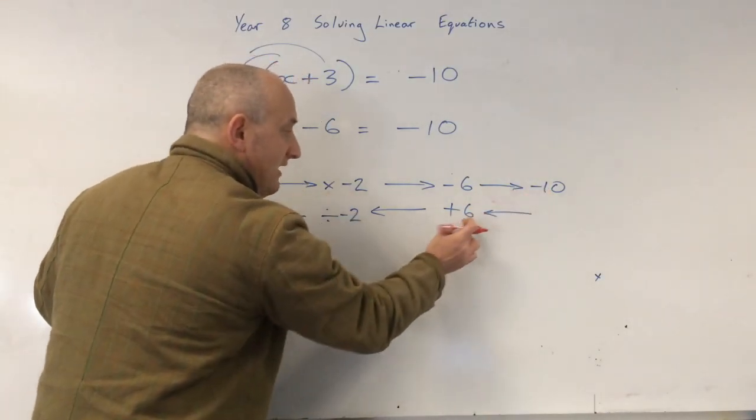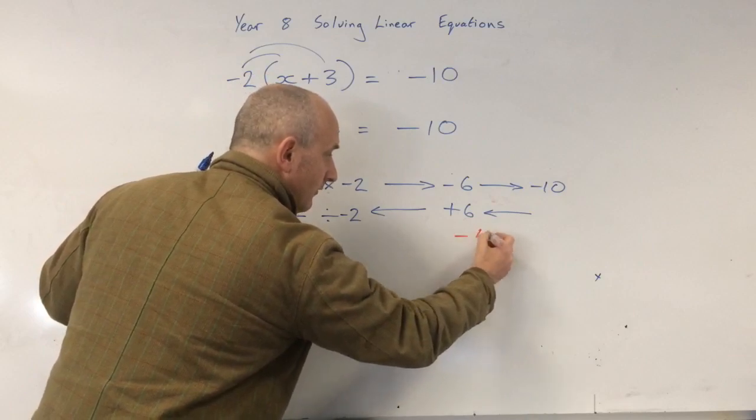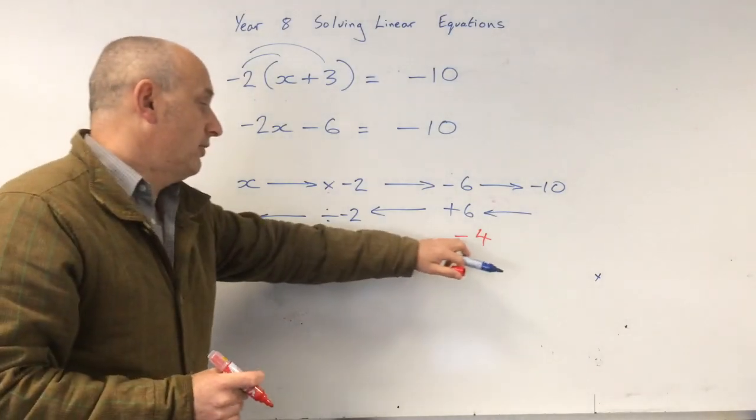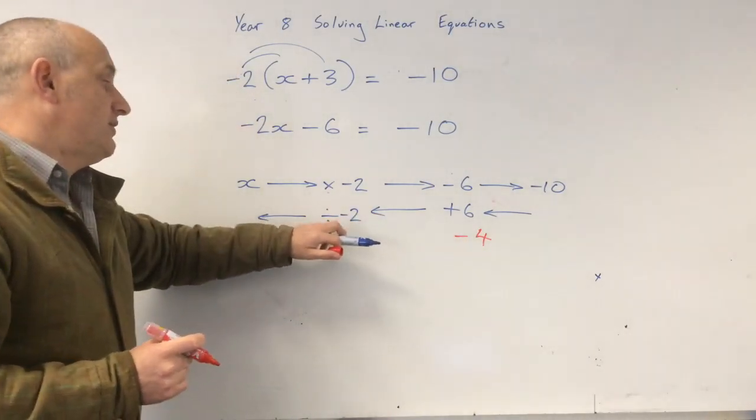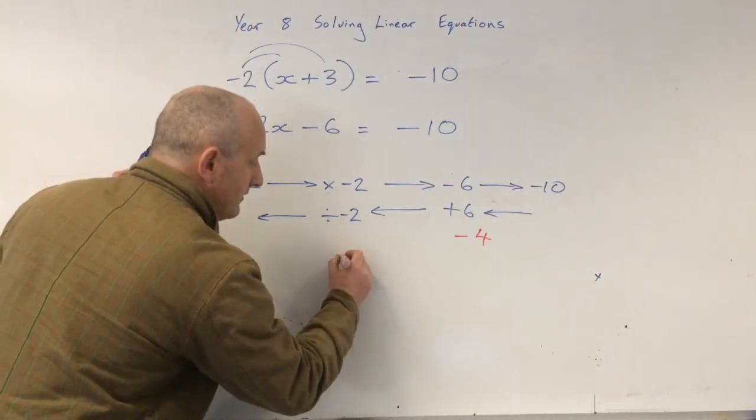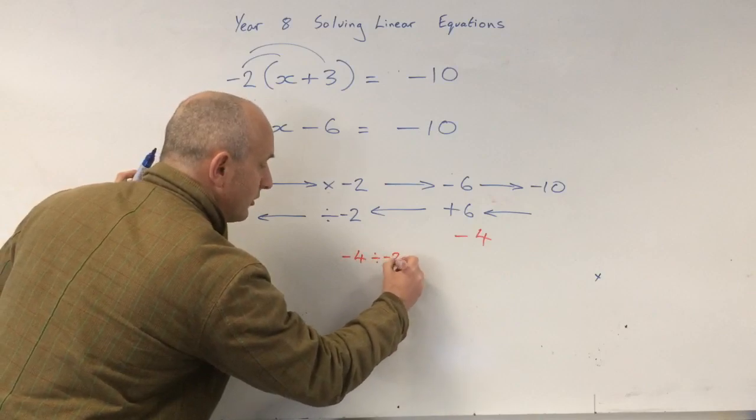Negative 10 add 6. Negative 4. And now negative 4 divided by negative 2. Now be careful with this. Negative 4 divided by negative 2.